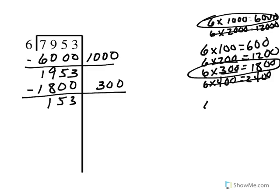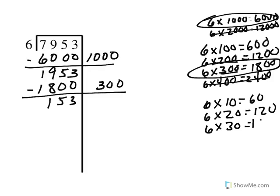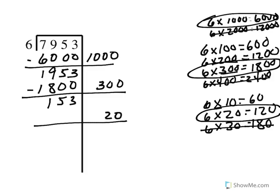Now I'm going to take my divisor again and multiply it by 10s. 6 times 10 is 60, 6 times 20 is 120, 6 times 30 is 180. I cannot subtract 180 from 153, but I can subtract 120. So I'm going to subtract 20 groups of 6, which is 120. That gives me 3 minus 0 is 3, 5 minus 2 is 3, and 1 minus 1 is 0, leaving 33.